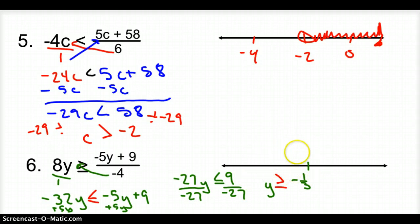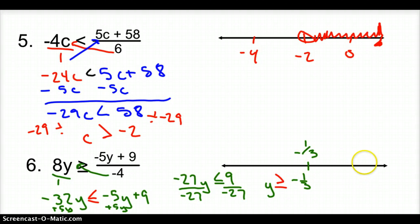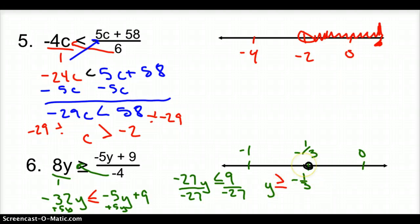Negative 1/3 goes in the middle, 0 on the right since it's greater, and negative 1 on the left since it's less. There's a closed circle because of the underline, and since the variable is on the left I shade following the arrow.